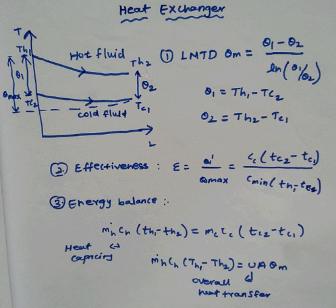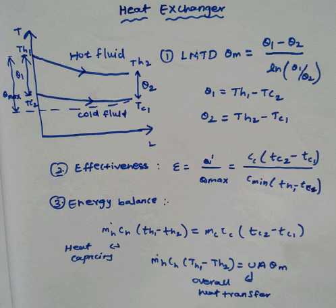TH2 minus TC1 gives the second temperature difference. TH1 and TH2 are substituted into this equation to find the LMTD.